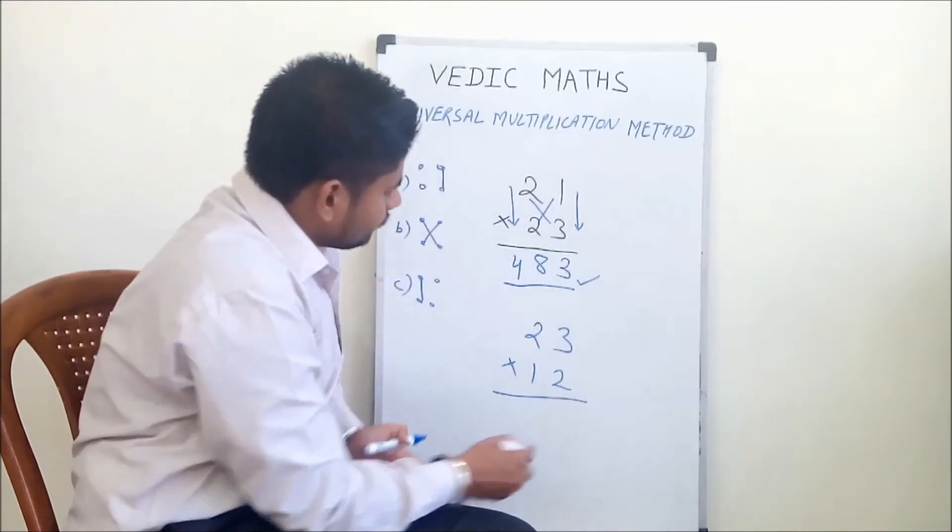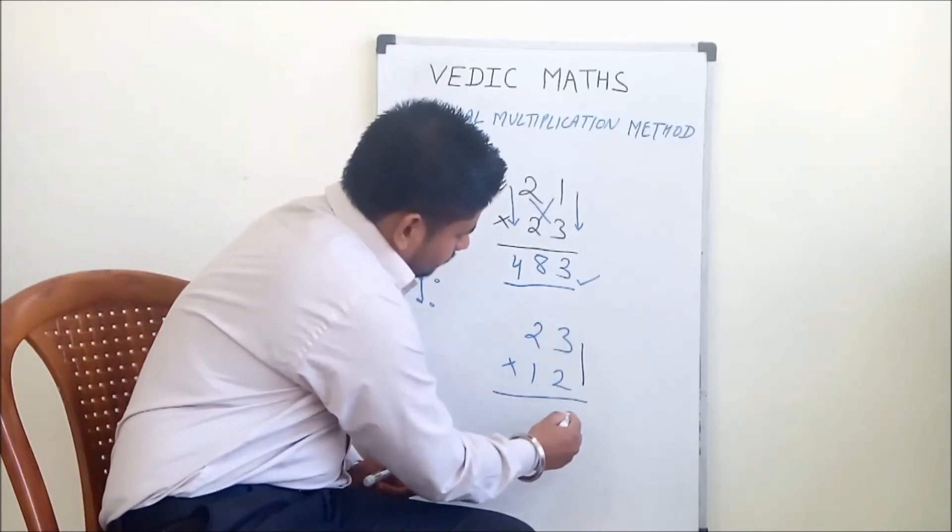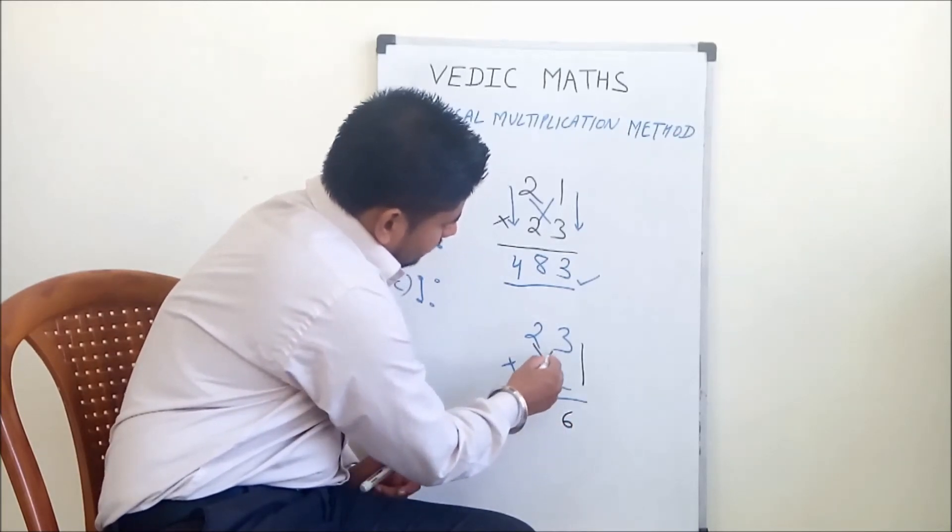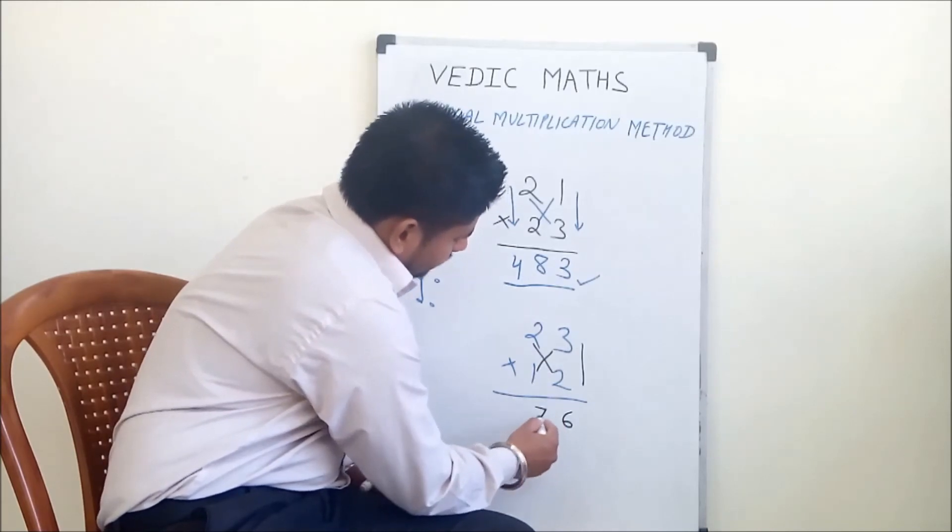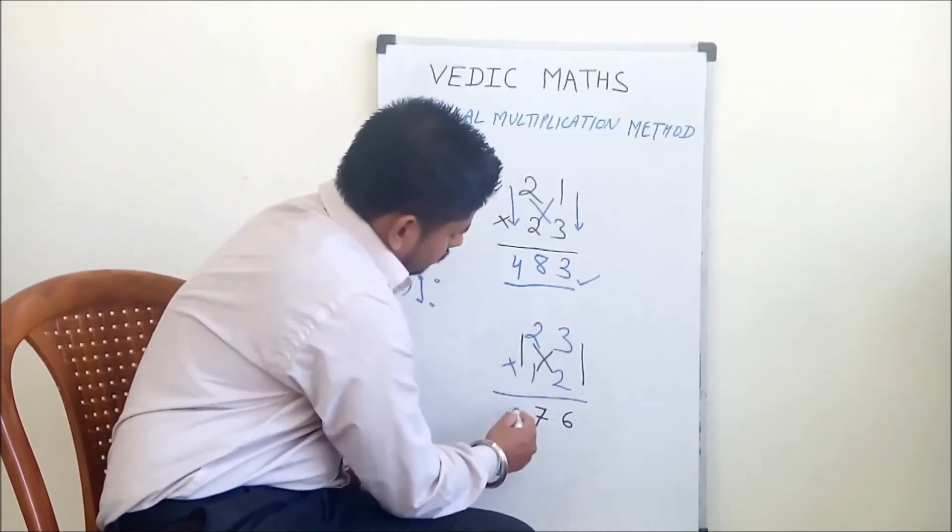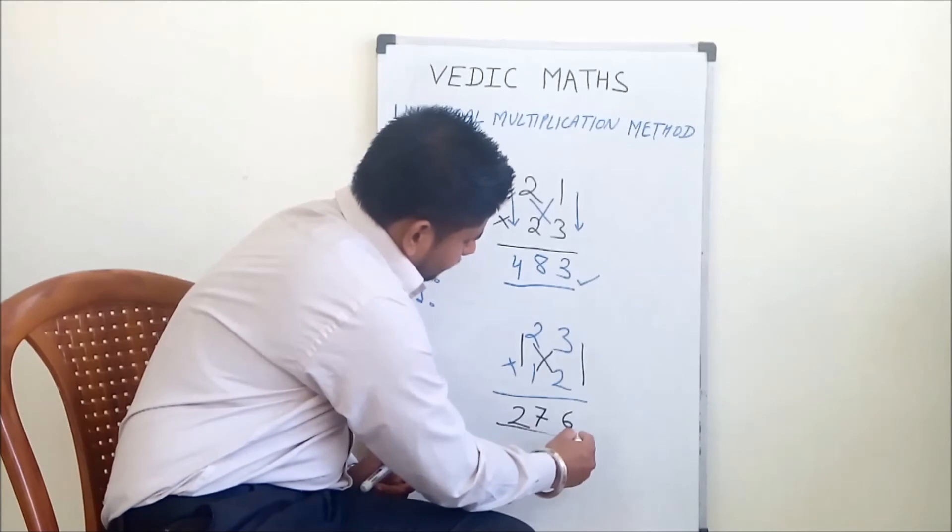How do we multiply? 3 into 2 is 6. 2 into 2 is 4 plus 3 into 1 is 3. 4 plus 3 is 7. And 2 into 1 is 2, giving us 276.